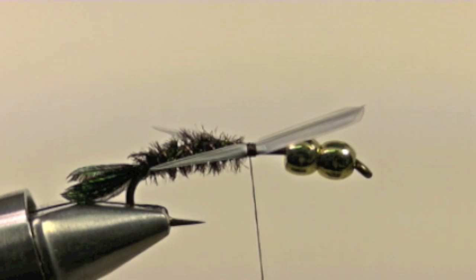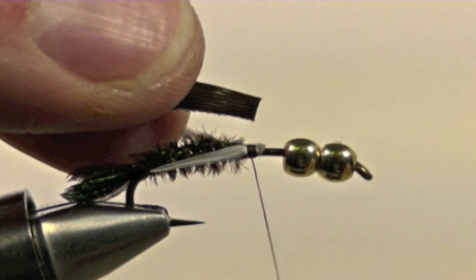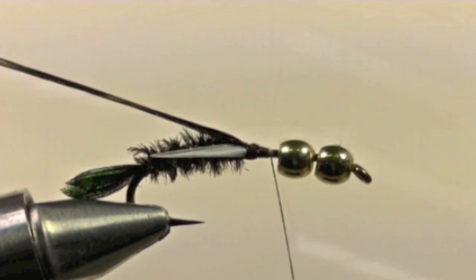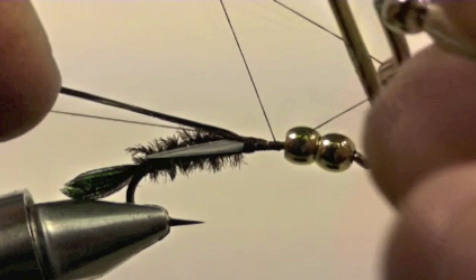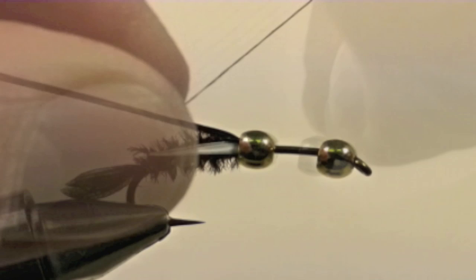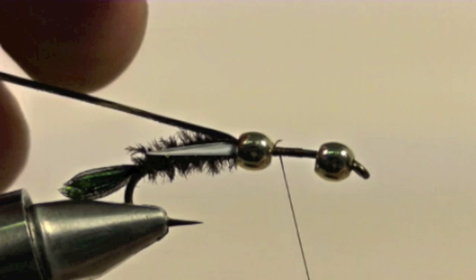Next we will add a piece of treated turkey wing and then we whip finish. Clip off the excess thread and then we wedge the back bead onto the base of thread on the back half of the fly.